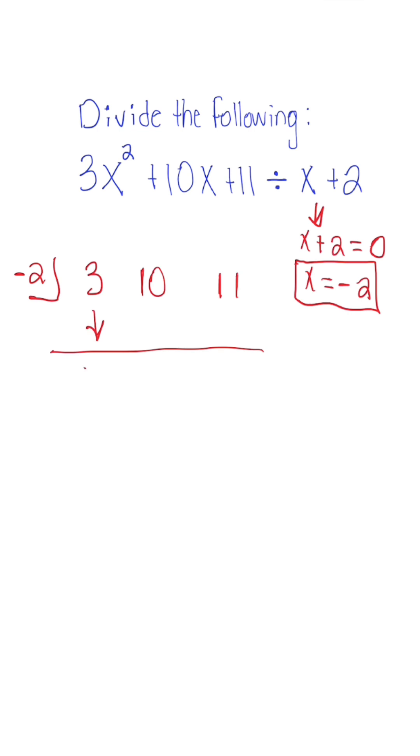So after I bring down my first term and we multiply, three and negative two is going to give me negative six. When we add ten and negative six, we get positive four, and we multiply four and negative two to get negative eight.